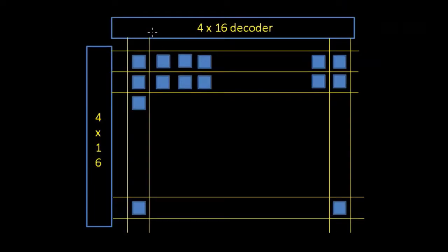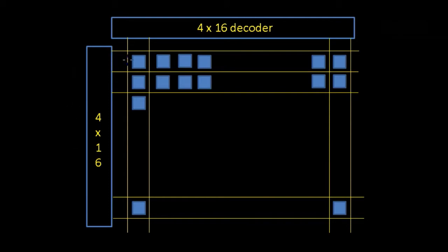Before we get into Logisim, let's have a look at how we're going to design our RAM. We're going to start off with a 4-by-16 decoder — this takes 4 inputs and gives us 16 outputs. These 16 outputs are connected to vertical lines, so we'll have 16 vertical lines. We then take another 4-by-16 decoder with 4 inputs and 16 outputs, but now we've got 16 horizontal lines going down.